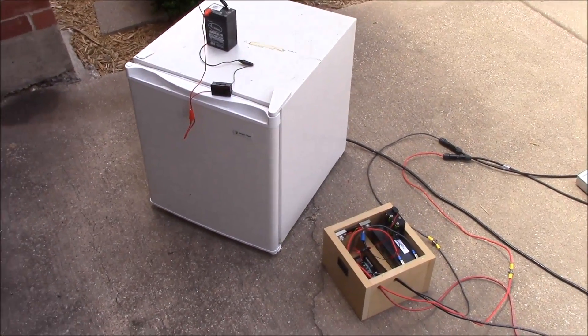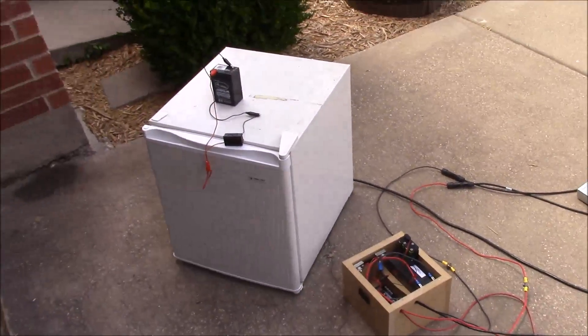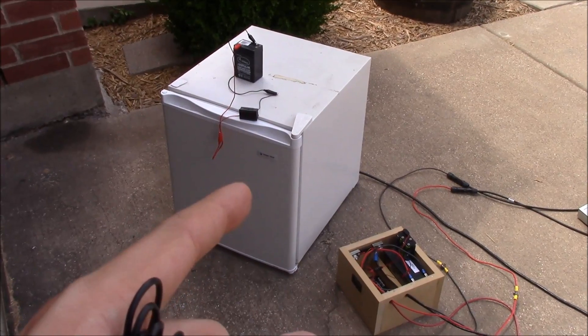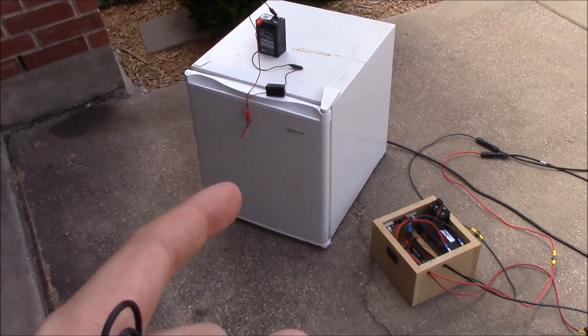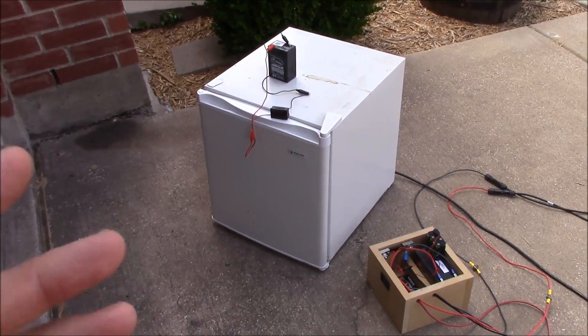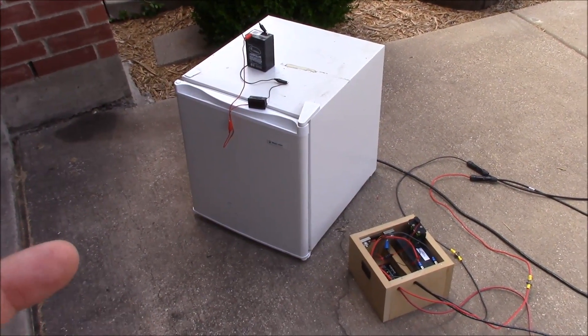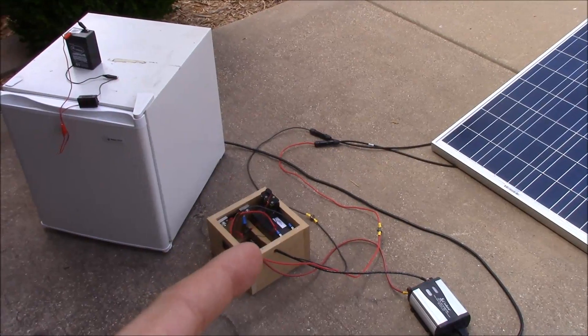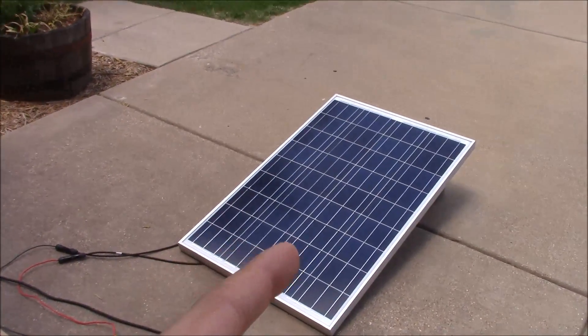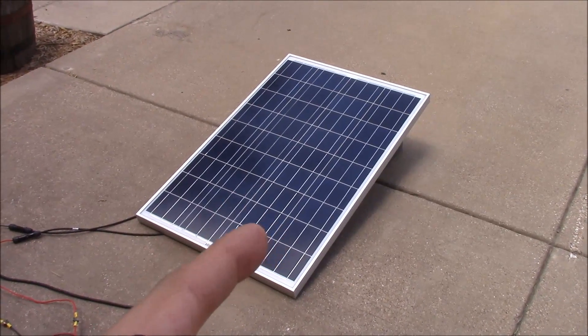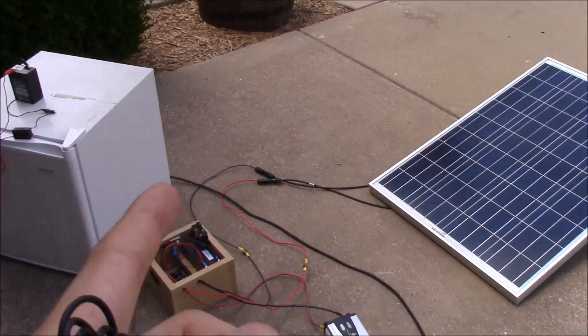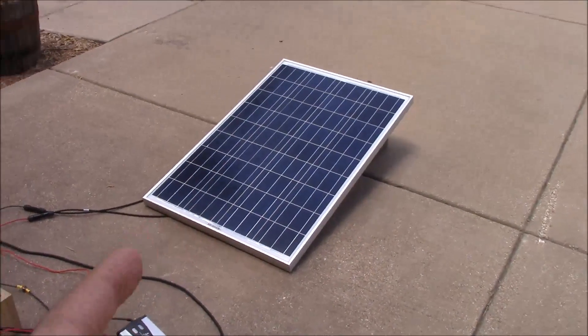I guess while we're waiting for the sun to come out from behind the cloud, this refrigerator draws right at an amp. Just a little bit over an amp of AC power. Which means it's about 120, 130 watts that it takes. Which means on 12 volt it's going to take 10 amps. So theoretically this panel, this is a 100 watt panel. This cannot produce 10 amps.